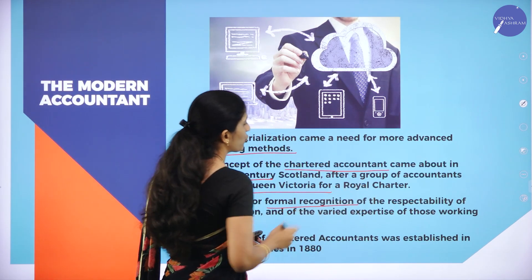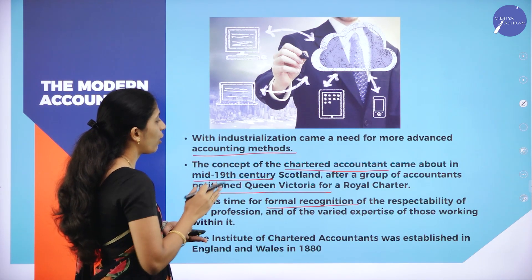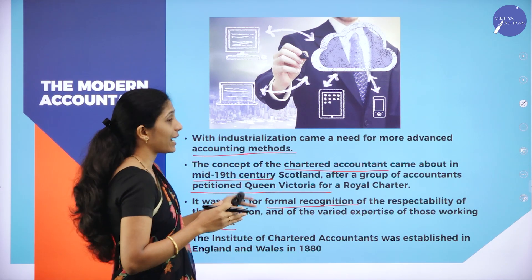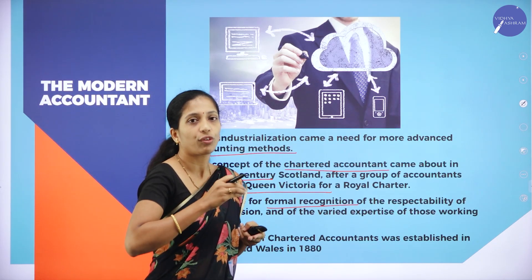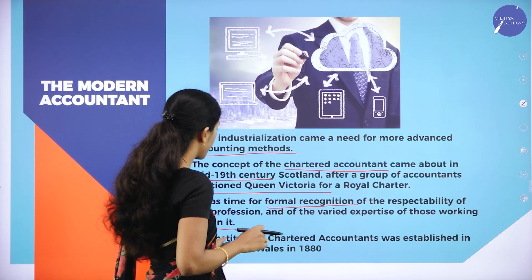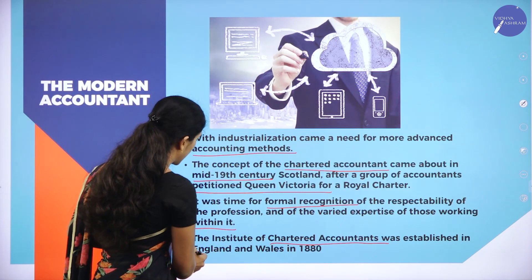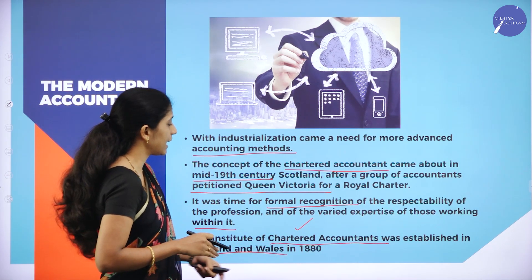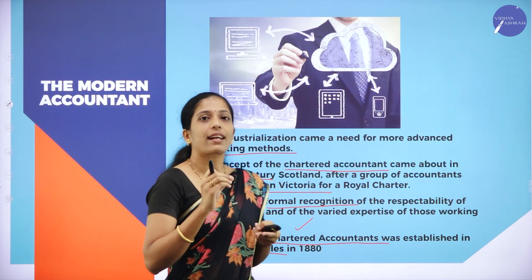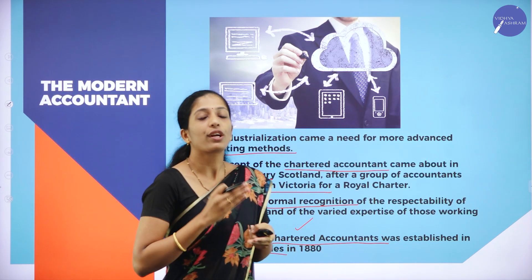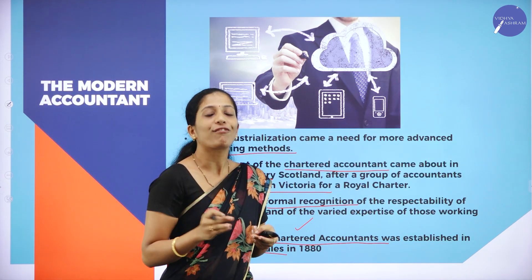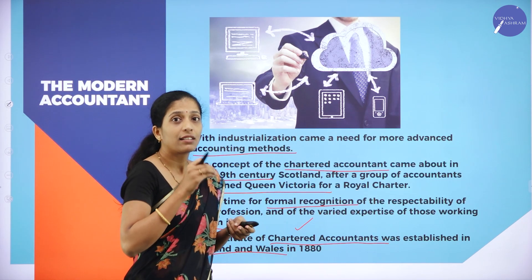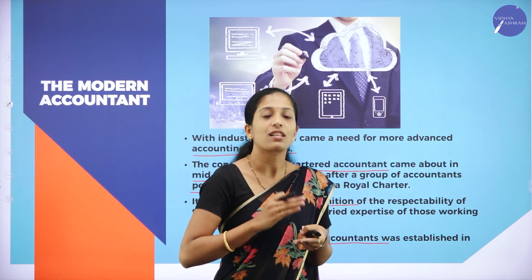It was time for formal recognition of the respectability of the profession and the various expertise of those working within it. After the petition with Queen Victoria, recognition for the Chartered Accountant profession was established. The Institute of Chartered Accountants was established in England and Wales in 1880. Later it got popular recognition. Today, Chartered Accountant is one of the most popular professions — they verify books of accounts and conduct a number of activities related to accounting. This profession was recognized as one of the important professions after the petition with Queen Victoria.